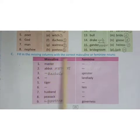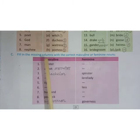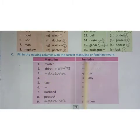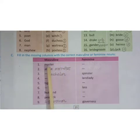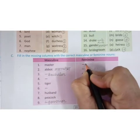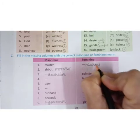Now let us do exercise C. Fill in the missing columns with the correct masculine and feminine nouns. You have two columns here, masculine and feminine. Where the masculine is written, the feminine is not written, so we have to fill it. If the feminine is written, then the masculine is missing. Master's feminine is mistress, M-I-S-T-R-E-S.